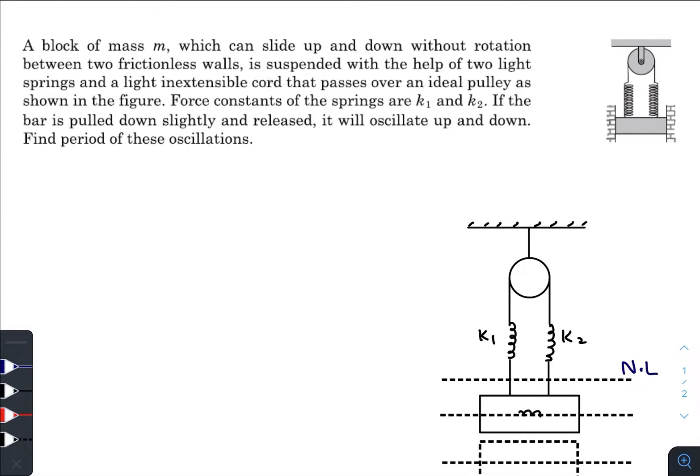Hey, what is up everyone! I hope all of you are doing great. In today's question we have a block of mass m which can slide up and down without rotation between two frictionless walls, suspended with the help of two light springs and a light inextensible cord that passes over an ideal pulley.